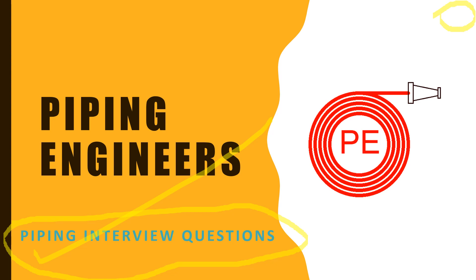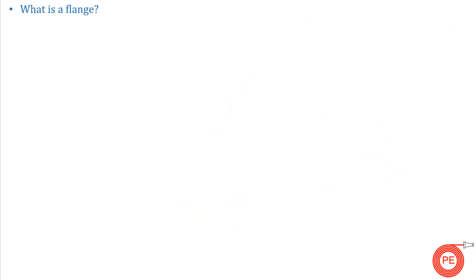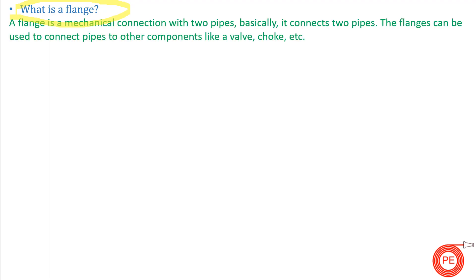Our first question: what is a flange? You would have seen flanges in your day-to-day life or in your industry. A flange is a mechanical connection between two pipes — it is used to connect two pipes and components like valves, chalk, etc. That is the definition of a flange.